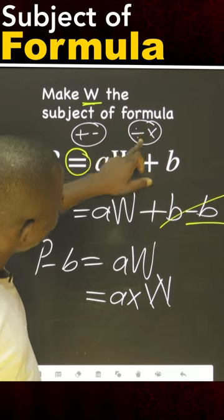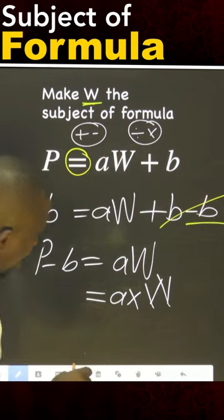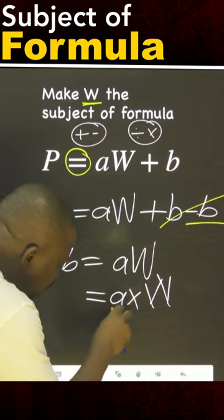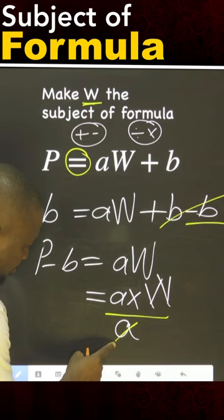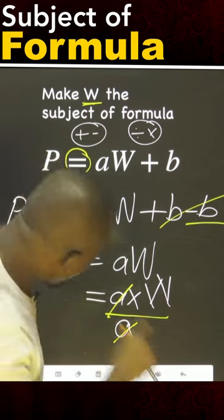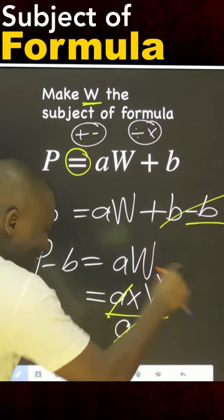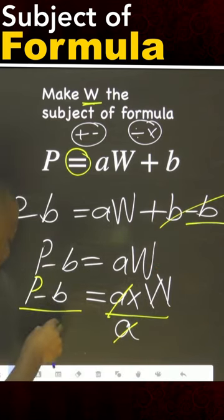Now, as you have seen here, we use divide to remove multiplication. So for this A to go, we say divide by A. That is the only way W can remain alone. Because I did this operation on this right-hand side, I must also do the operation on the left-hand side.